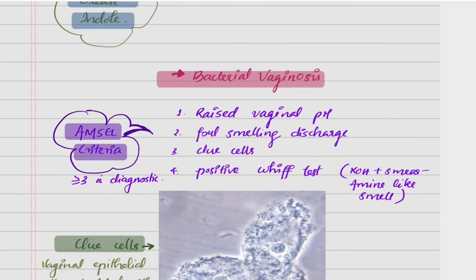Gardnerella vaginalis causes the disease bacterial vaginosis. Bacterial vaginosis is also caused by some other anaerobic bacteria like Mobiluncus, etc.